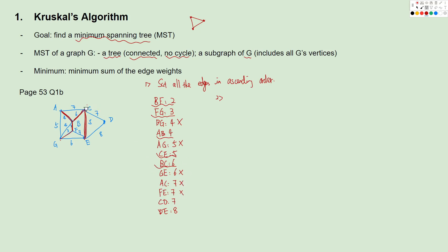Then we consider CD. If we link CD, there is no cycle, so we add it. At this point, all vertices have been connected, so we don't need to continue the process — this spanning tree is done. We can draw this out with vertices A, B, C, D, E, F, and G. We can also calculate the sum of the weights: 4 + 6 + 5 + 7 + 2 + 3.